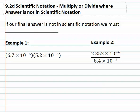In this video, we're going to look at multiplying and dividing numbers in scientific notation, but as we do, the answer we end up with is not going to be in scientific notation. It will be close, but not quite. So in this case, if our final answer is not in scientific notation, we must convert it or change it into that scientific notation.